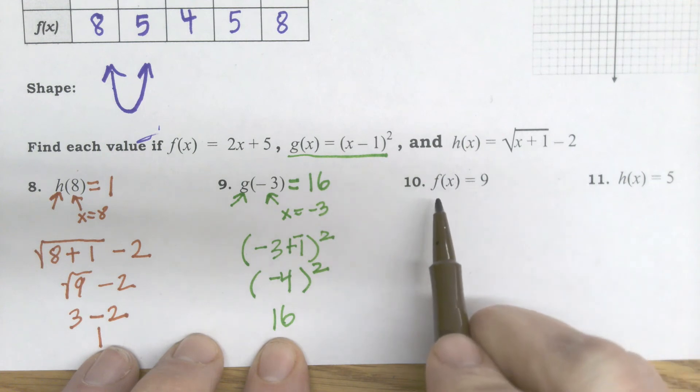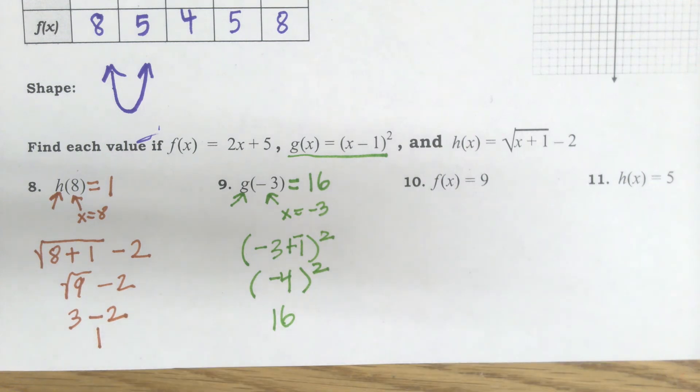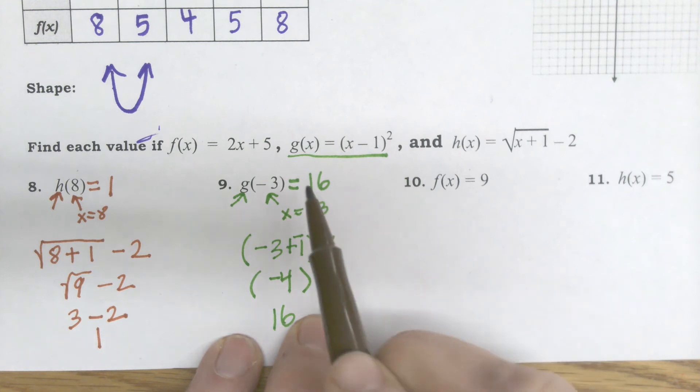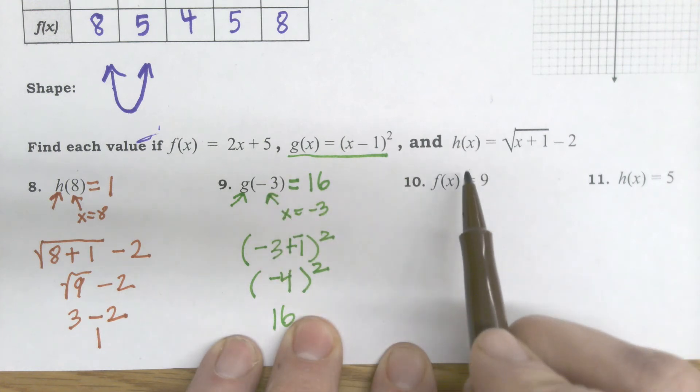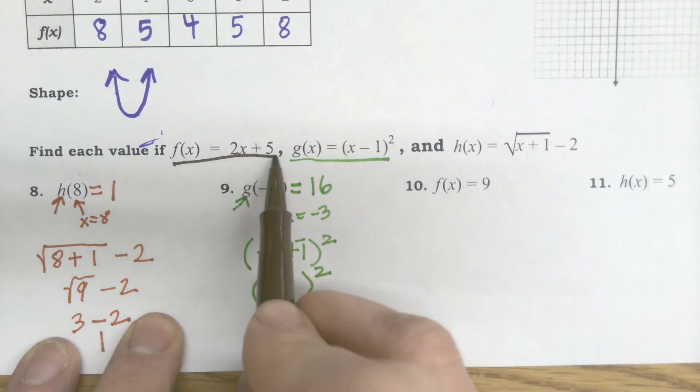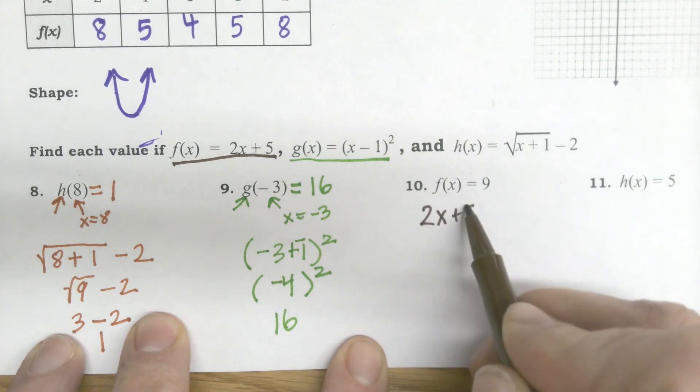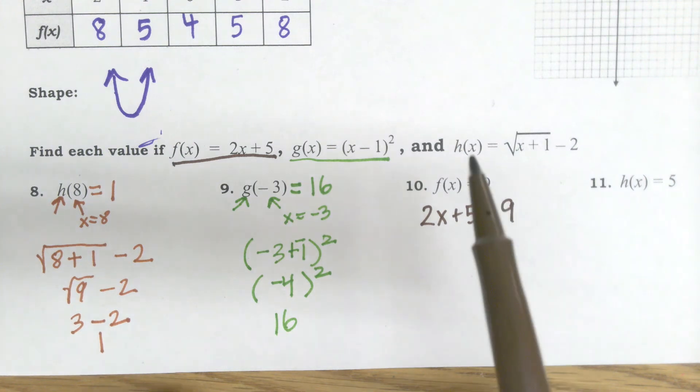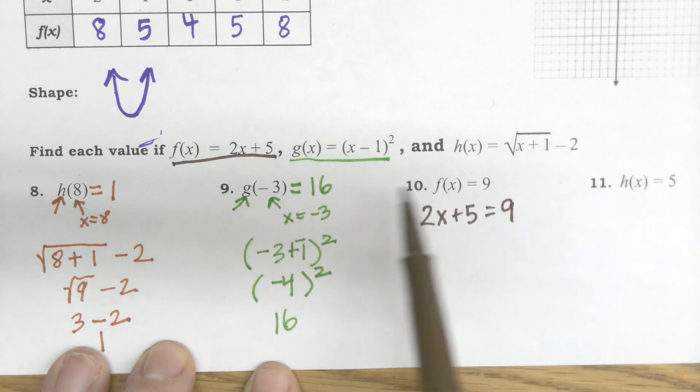10 is different in more than one way. It's got the f function, but what's the other big difference? It equals 9. It's not replace x with 9. Notice where the number is. This number is on the outside. So that means I have to take the f function. Here's the f function, which is 2x plus 5 and set it equal to 9. Do you see that difference?